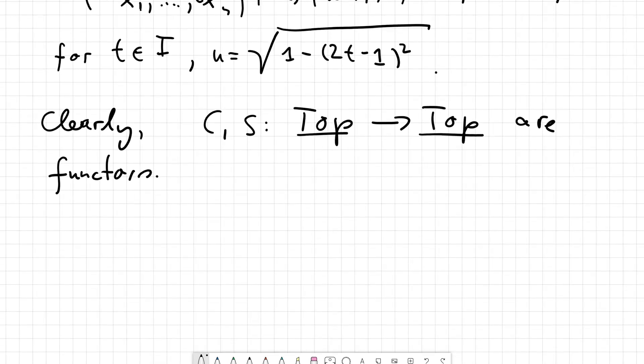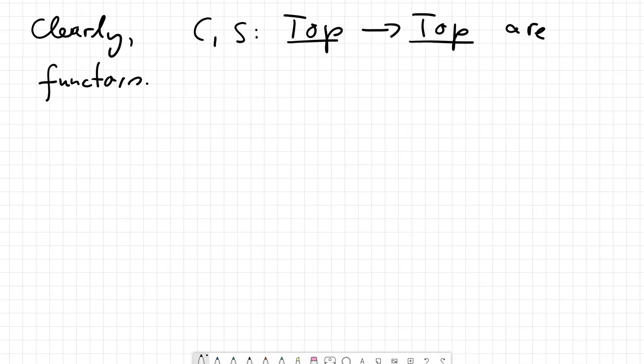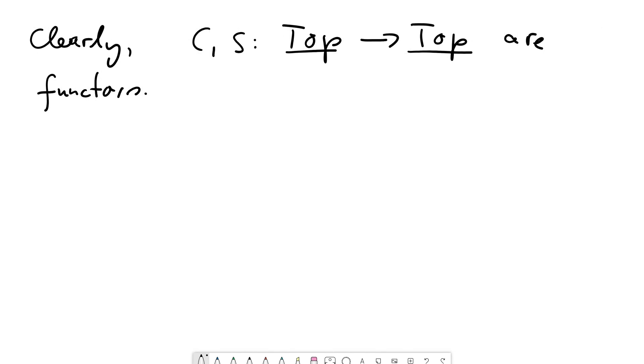So that should be clear. And now I can formulate the theorem I was advertising and formulate the suspension isomorphism. So in case our topological space is not empty, this we should now assume, we have a natural isomorphism. And the word natural is why I insisted that cone and suspension are functors, so that this makes sense.